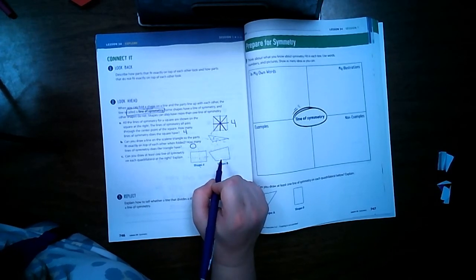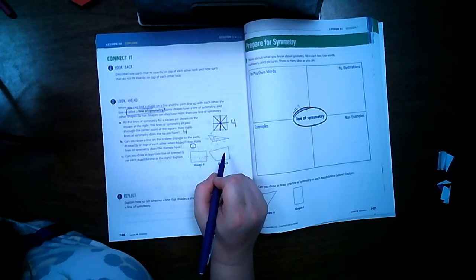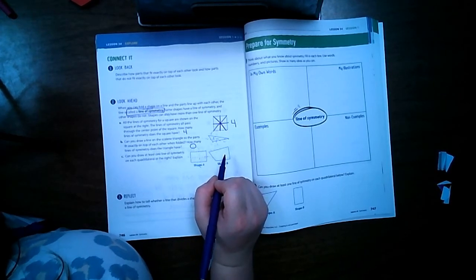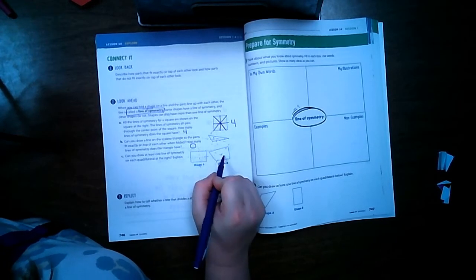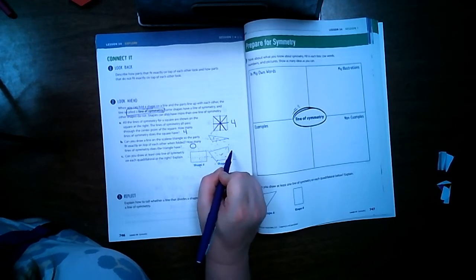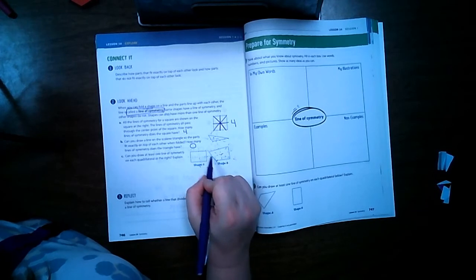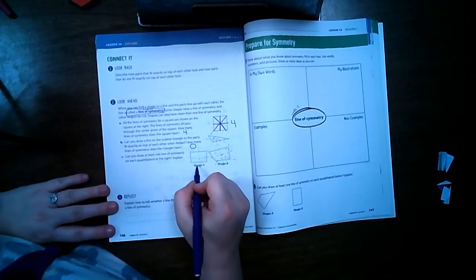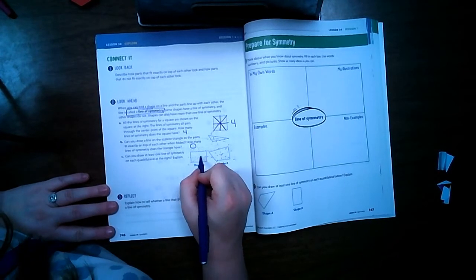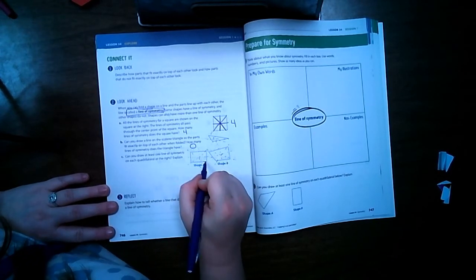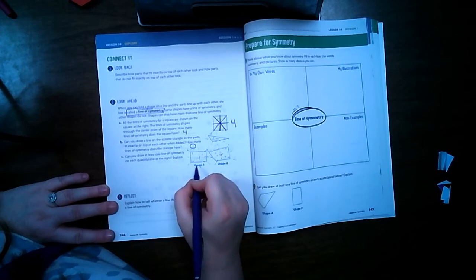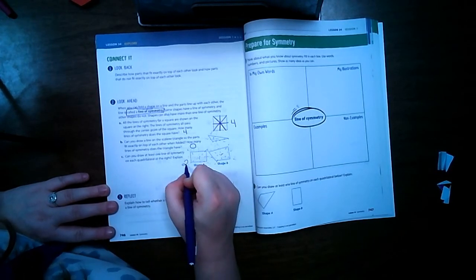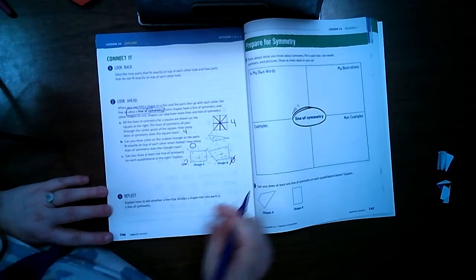This one's a little bit more tricky though. On this one, there's not really any lines because this doesn't work. That doesn't, that doesn't, and this doesn't because this side is shaped different than that side. So on this one, actually we can draw it that way and that way too on this one. Actually no, those two don't work. So this one has two lines and this one has zero lines of symmetry.